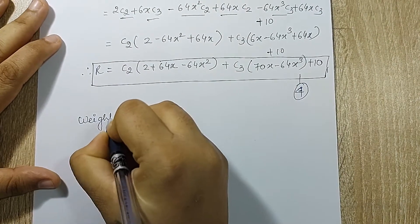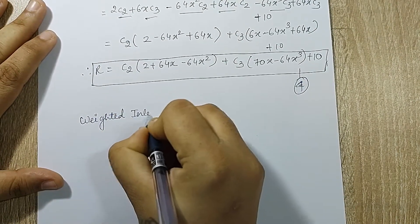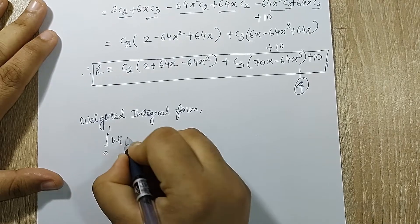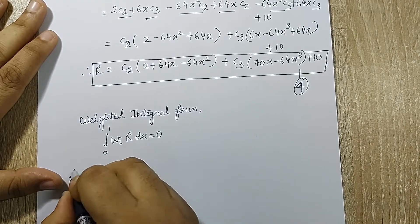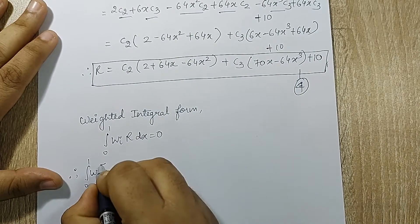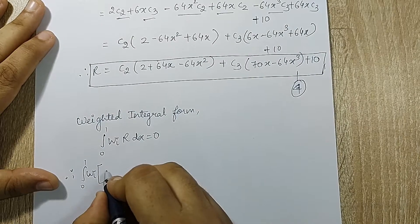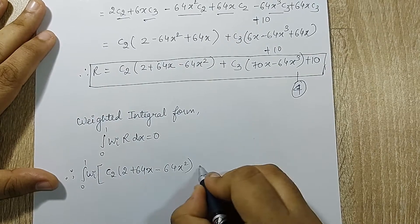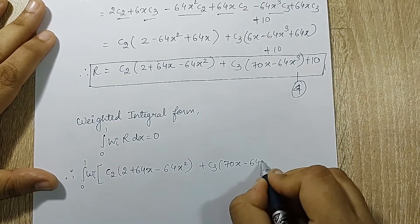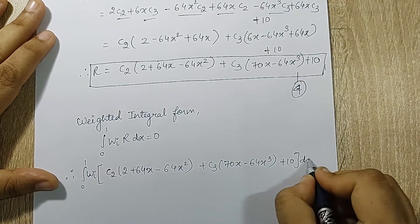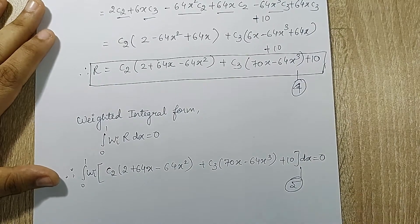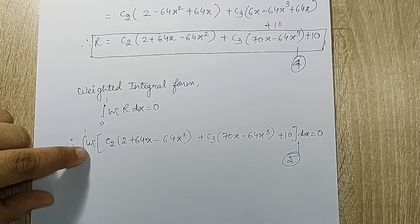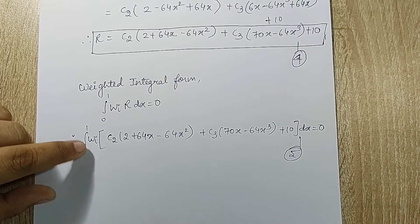Next, I will write the weighted integral form. The integral from 0 to 1 of w_i times r dx equals 0. Therefore, the integral from 0 to 1 of w_i multiplied by the entire residue expression in c2 and c3 equals 0. I mark this as equation 5. This is the weighted integral form. Now I will substitute various weight functions for the two different methods to calculate c2 and c3.